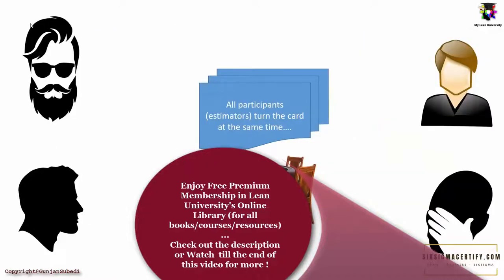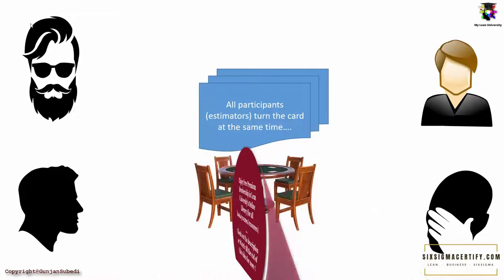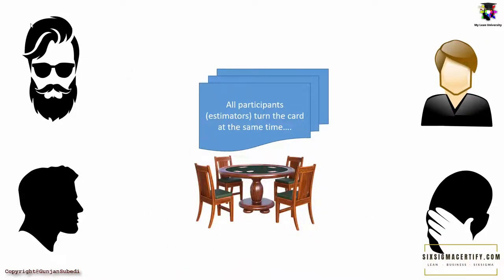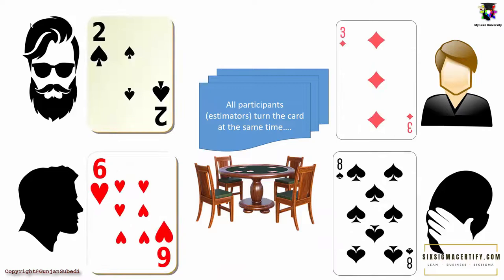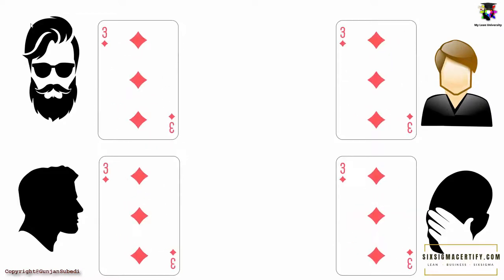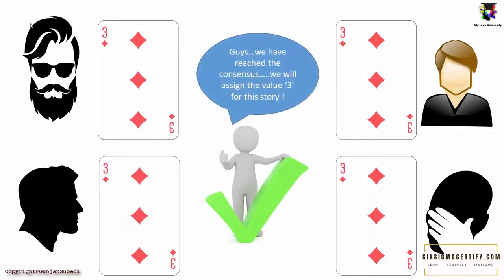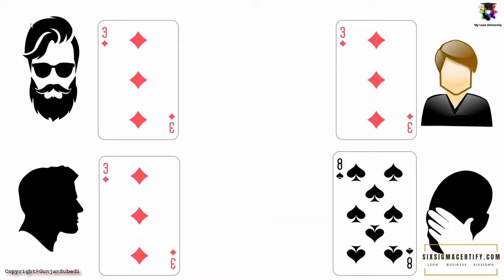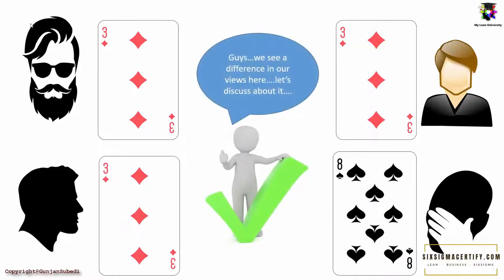All the participants in planning poker turn the card at the same time so that the actual view of the participants can be known. If all the estimators select the same number card, we will close the discussion for that particular user story. But in case of any differences, the team discusses and tries to reach the consensus for the weight of that story.